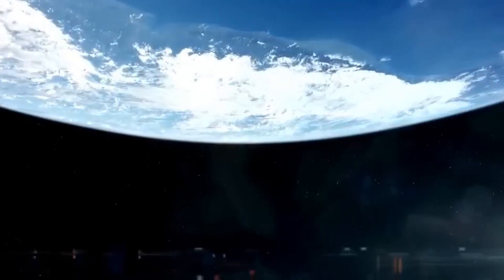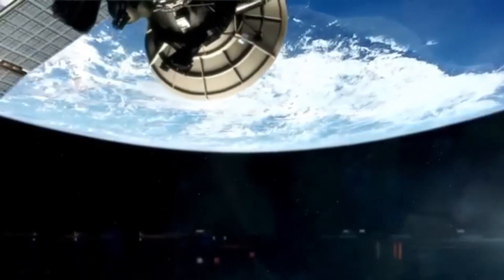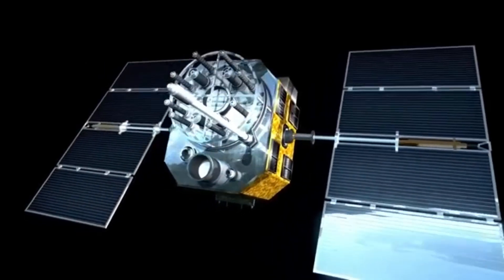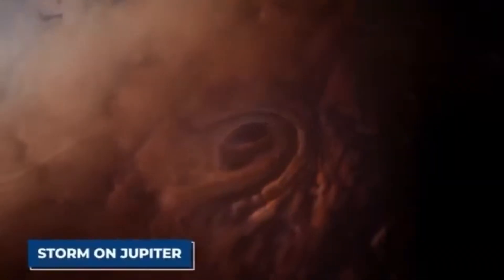Voyager 2 also discovered Neptune's peculiar magnetic field tilted and offset from its center, challenging existing models of planetary magnetism. Originally designed to last just five years, Voyager 2 has far surpassed expectations, continuing to transmit data over four decades later.